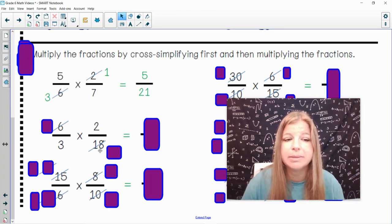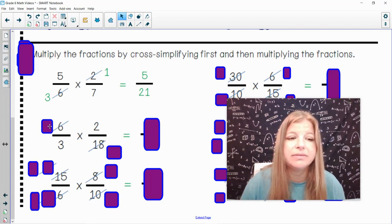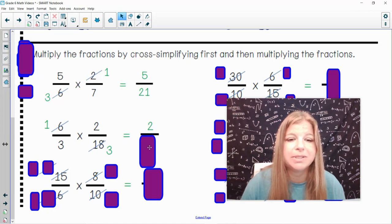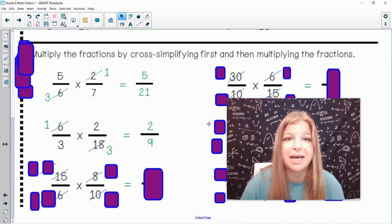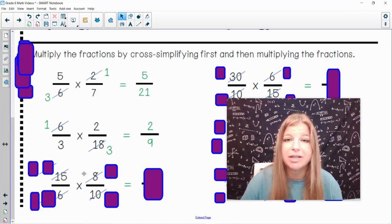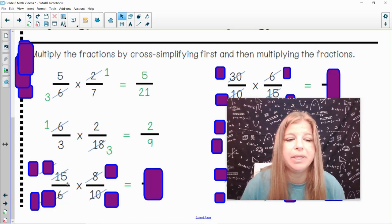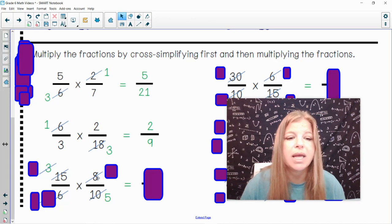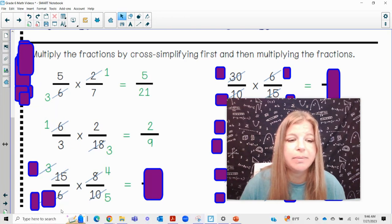Next one. You can see I cross-simplified my 6 and my 18. 6 and 18 are both divisible by 6. 6 divided by 6 is 1. 18 divided by 6 is 3. I'm going to multiply what I have left. 1 times 2 is 2. 3 times 3 gets me 9. So my answer is 2 9ths. And my last one here. You can see I cross out everything. So there's a few things that are going to happen. 15 over 10, so 15 and 10 cross-simplify by 5. 15 divided by 5 is 3. 10 divided by 5 is 2. 8 and 6 are both divisible by 2. 8 divided by 2 is 4, and 6 divided by 2 is 3.